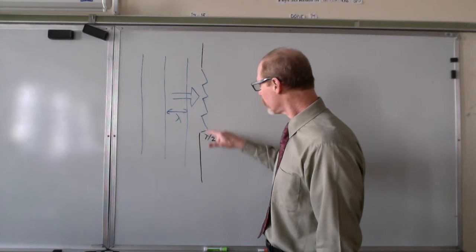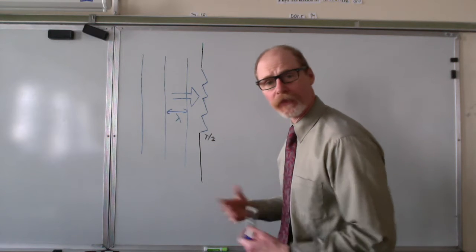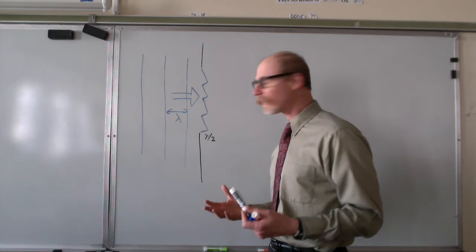This one has to be lambda over 2 ahead of this, so that this interferes with this, interferes with this, interferes with this. And then you'll have total destructive interference, total cancellation.